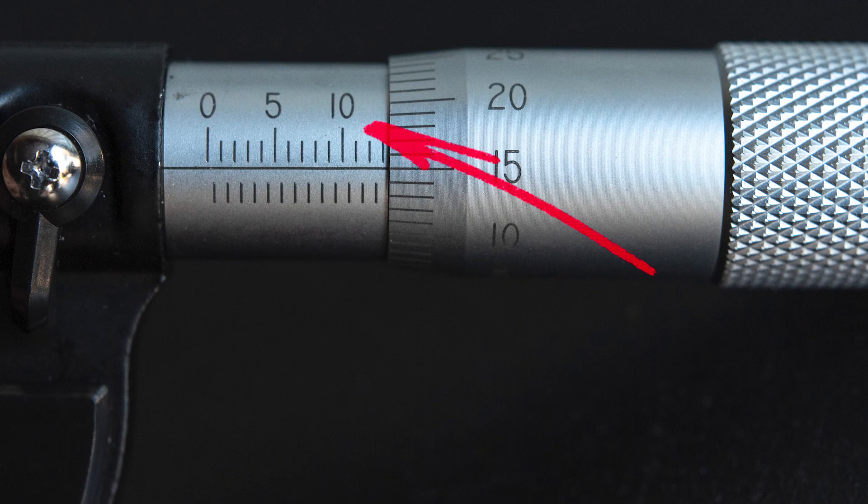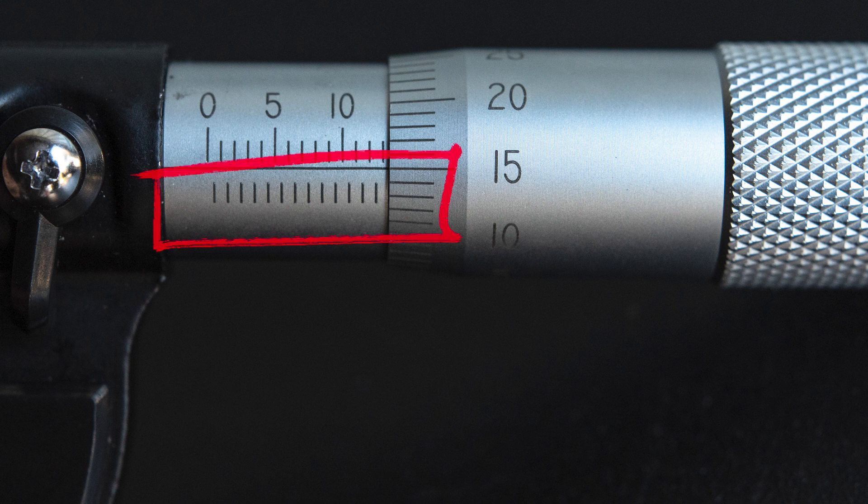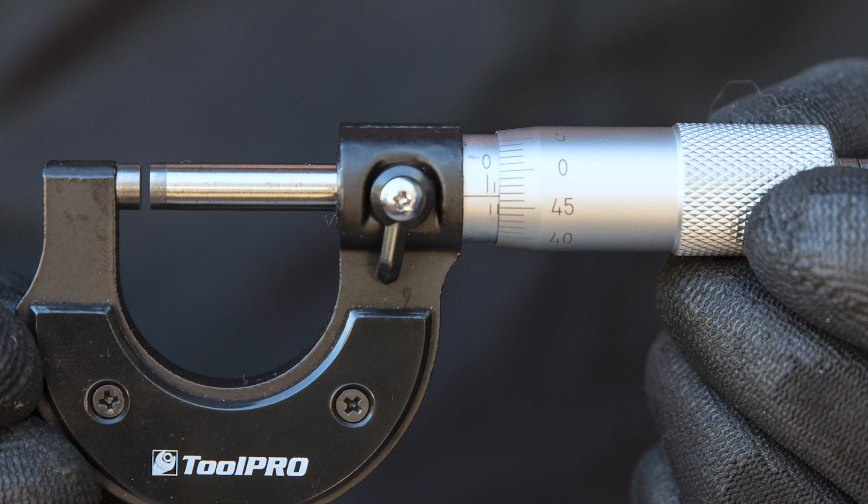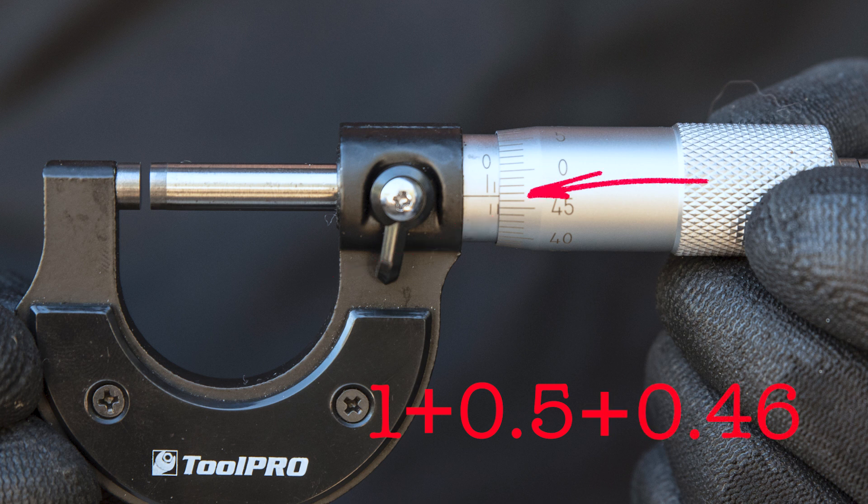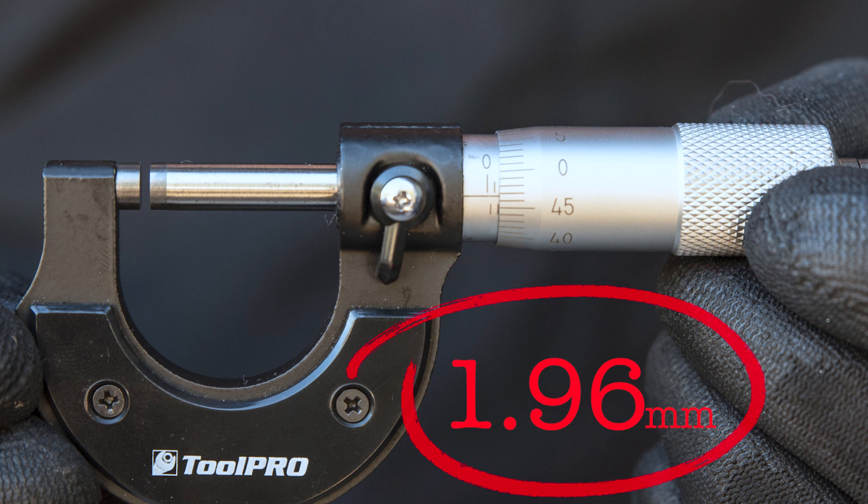The top row of markings on the sleeve are whole millimeters. The bottom row are half millimeters, and the markings on the thimble are one-hundredth of a millimeter. To determine an accurate reading, take the number of whole millimeters, add the half millimeter if applicable, and then add the number on the spindle. In this case, the item measures 1.96 millimeters.